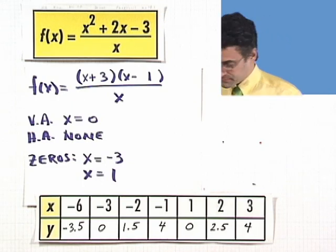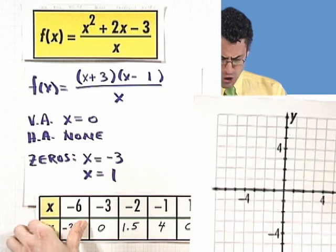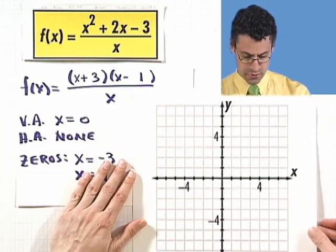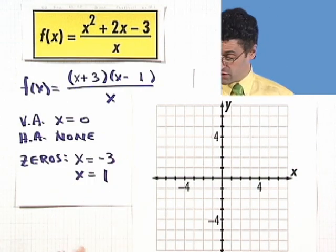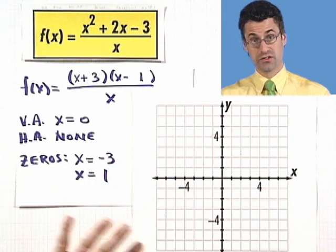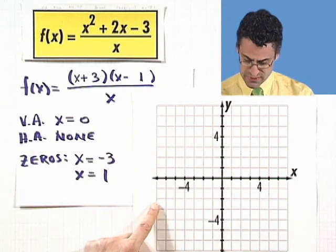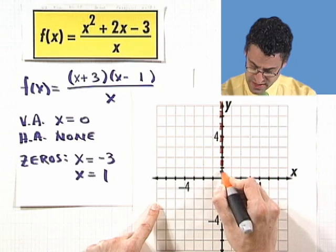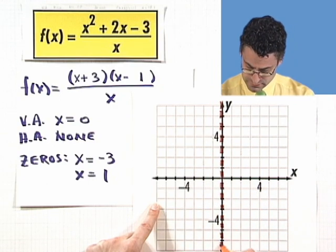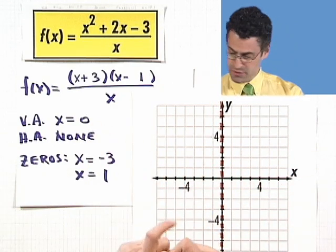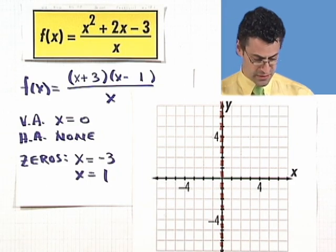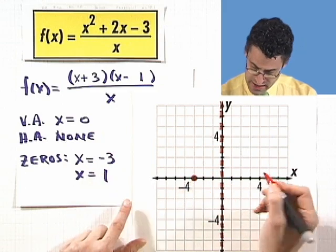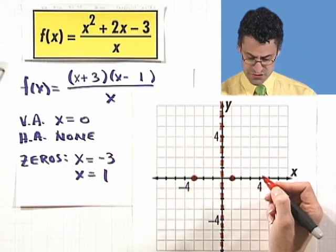Let's plot away. The first thing I always do is draw in the asymptote, since that's going to divide the world up into various pieces. There's only a vertical asymptote, that's on the y-axis, x equals 0. So we cut the world up into two pieces. Let's plot some points — we have the zeros at negative 3 and at 1.